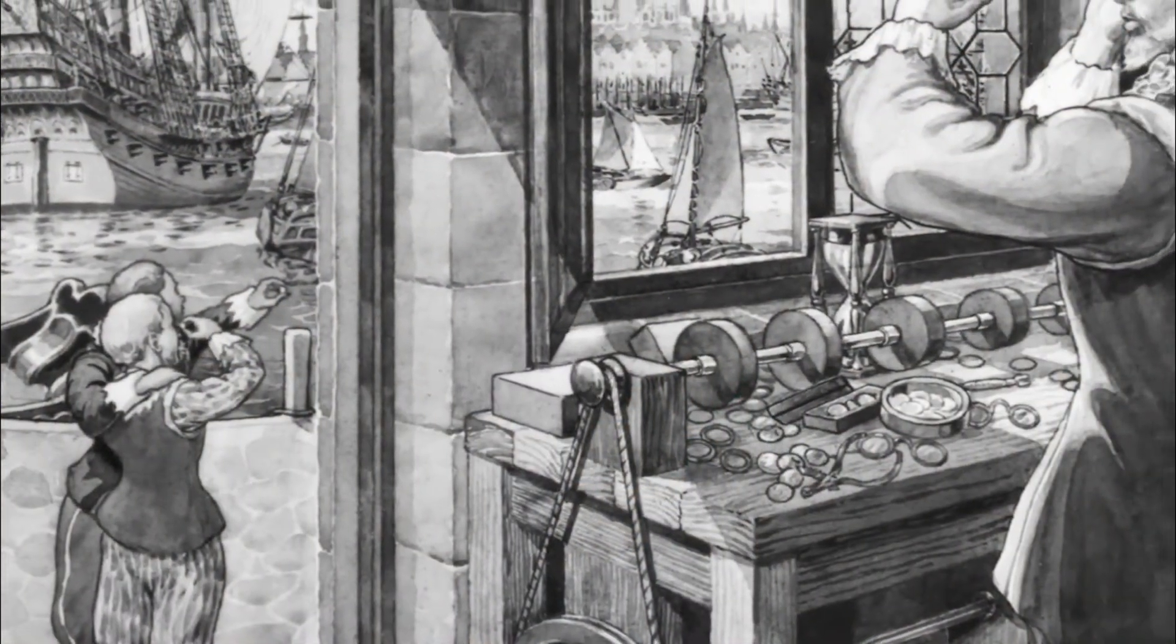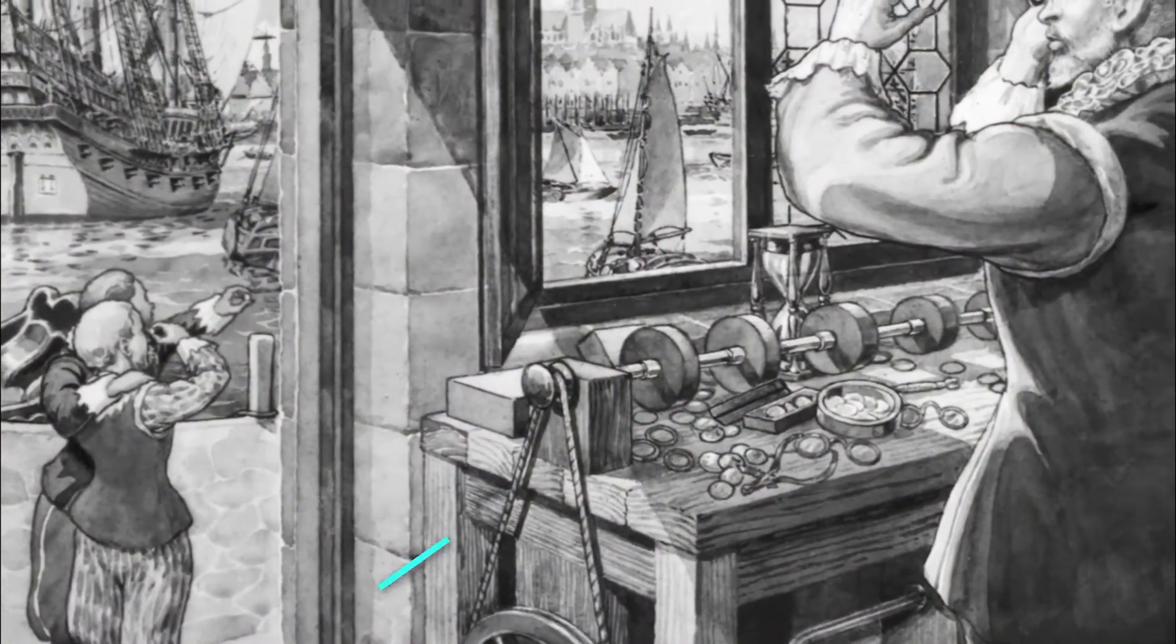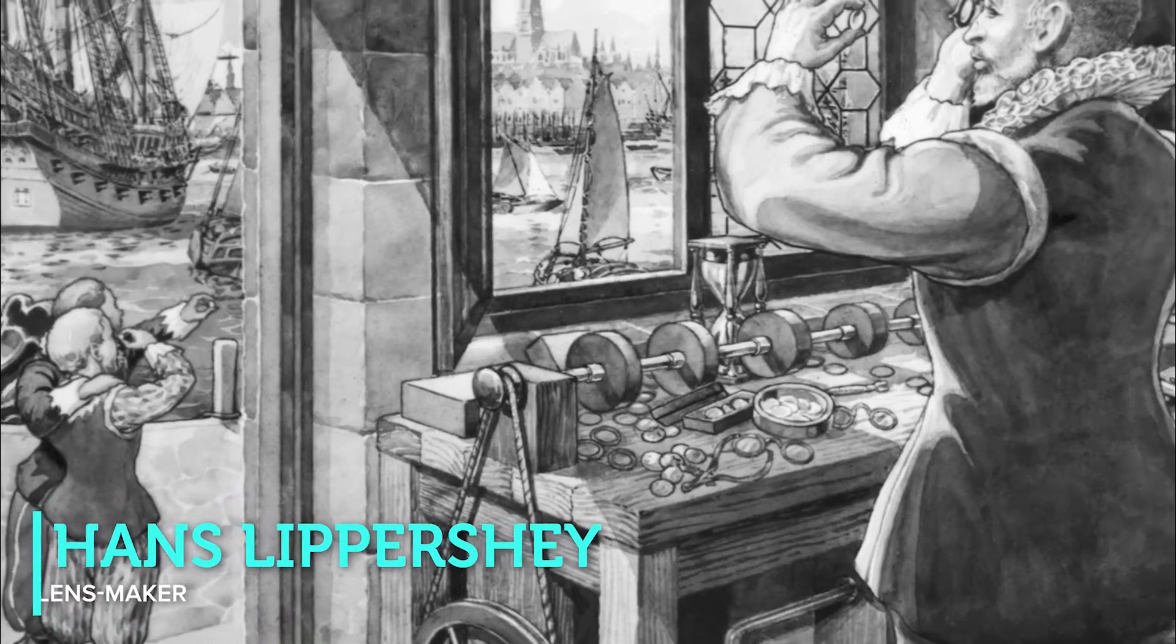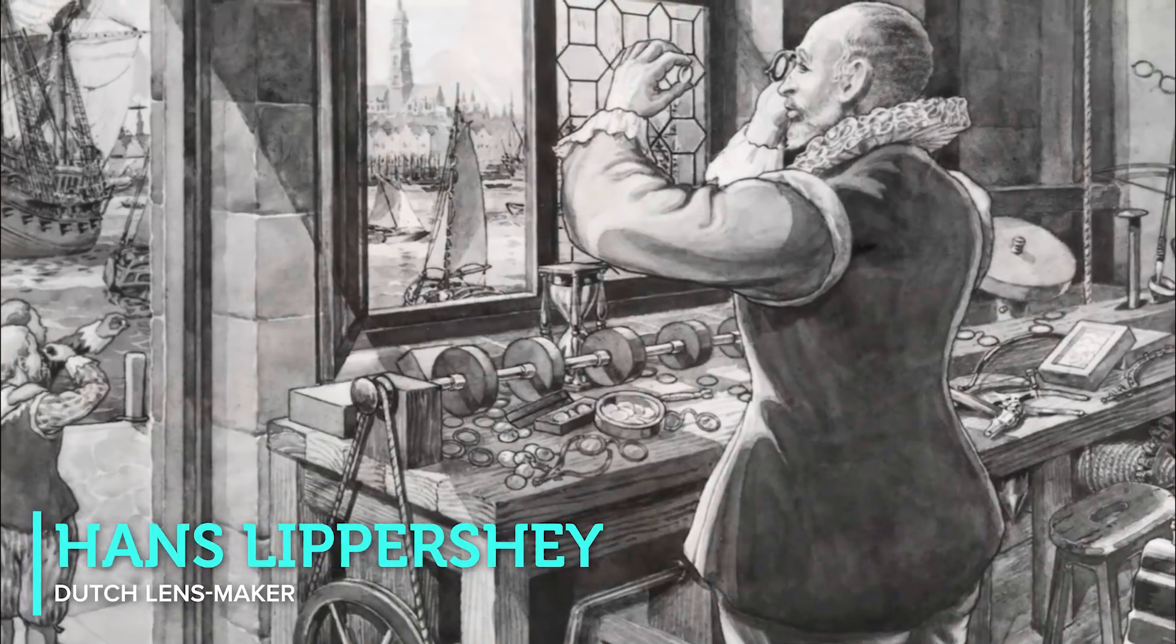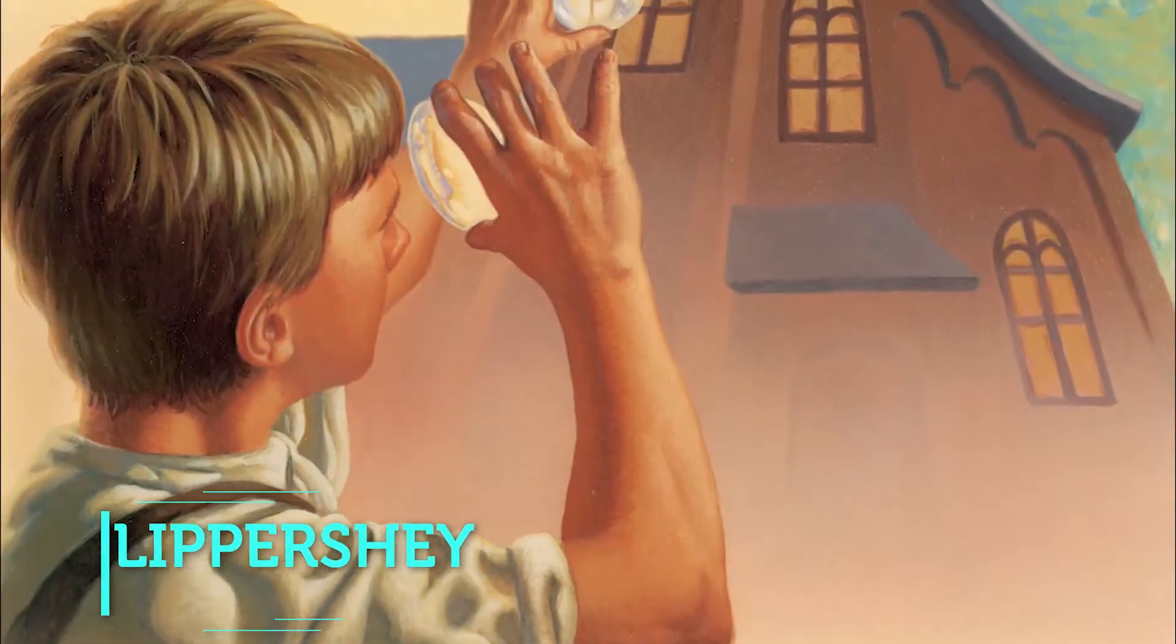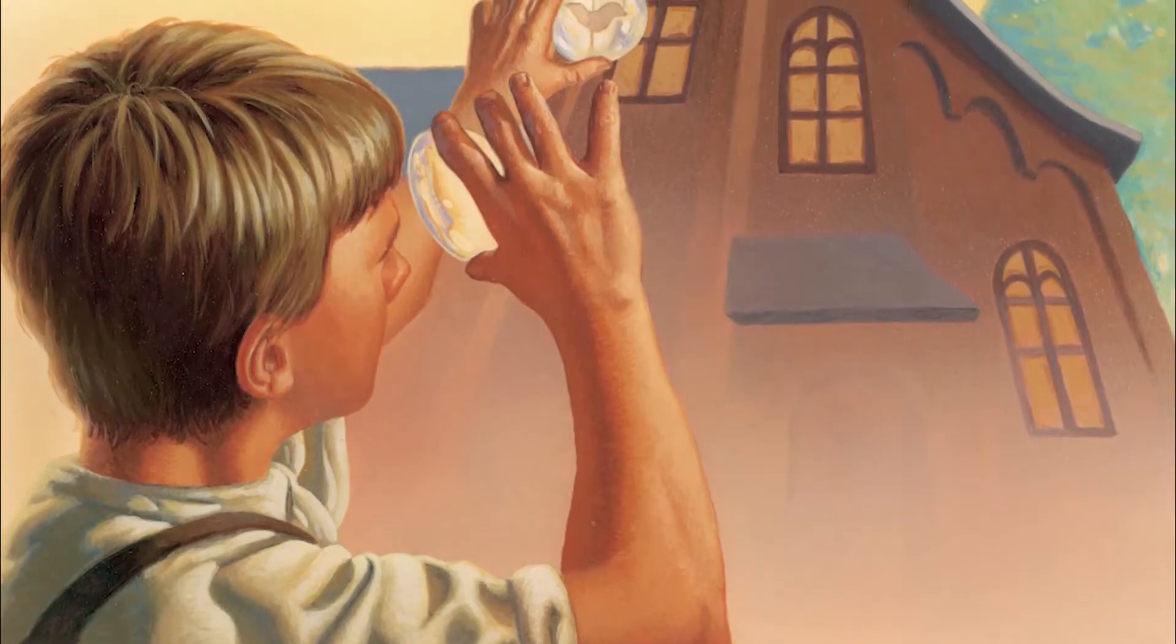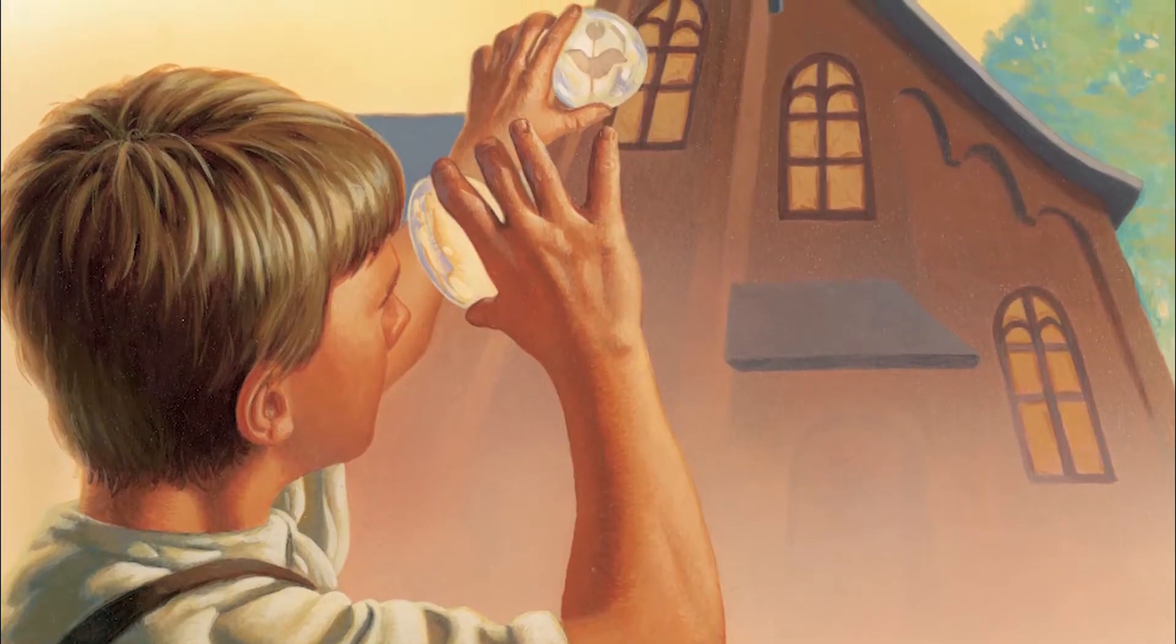Legend has it that a Dutch boy accidentally invented the telescope in 1608. He was an apprentice to lens maker Hans Lippershey. One day, the boy happened to look through two lenses at once. He was surprised to see a church weather vane jump toward him.